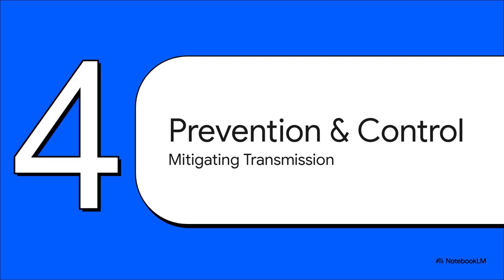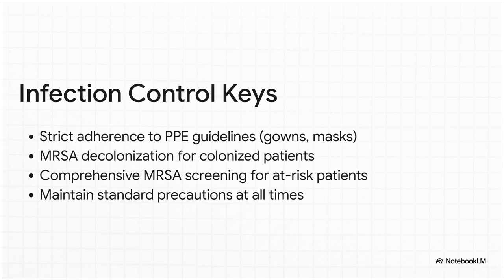Managing the patient in front of you is one huge challenge, but protecting everyone else in the hospital is another. Let's talk about the critical and often overlooked aspects of infection control and prevention. This is all about the non-negotiable fundamental rules of hospital hygiene — how you break the chain of transmission. Strict adherence to PPE: gowns, the right masks, gloves, the whole nine yards — that is your first line of defense. Beyond that, for patients known to be colonized with something like MRSA, you need proactive decolonization protocols. This, along with screening your at-risk patients, is how you contain the threat and keep it from spreading.